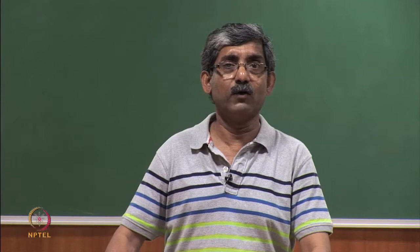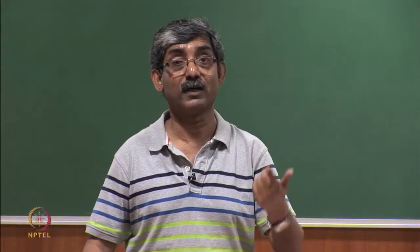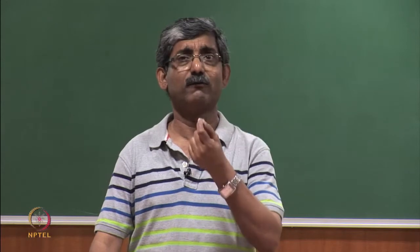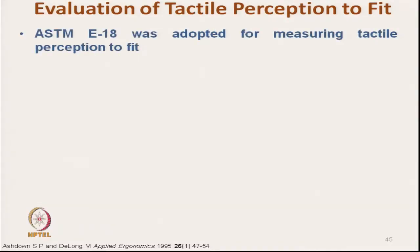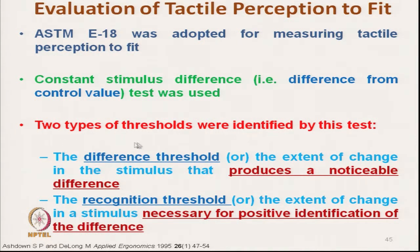Now we will discuss how to evaluate tactile perception to feet. We have discussed neurophysiological and tactile sensation earlier in detail; here we focus on feet-related tactile sensation. In ASTM E8, the test method was adapted to measure tactile perception to feet. Constant stimulus difference is used, and two types of thresholds exist: difference threshold, which produces a noticeable difference, and recognition threshold, which is the positive identification of that difference.